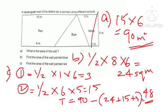Blue area is 24. Total area is 90. Then blue area is area minus area. Red area is 90 minus yellow area minus blue area. Now 90 minus 42 is equal to 48 square metres. This question is complete.